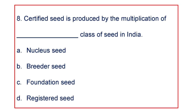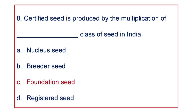Next question: Certified seed is produced by the multiplication of which class of seed in India? A. Nucleus seed, B. Breeder seed, C. Foundation seed, or D. Registered seed. The answer is Foundation seed.